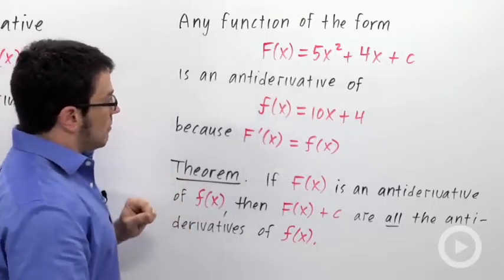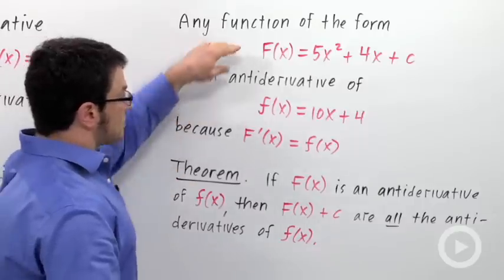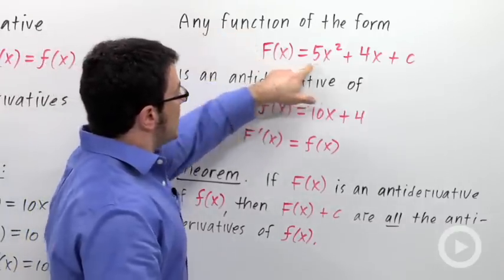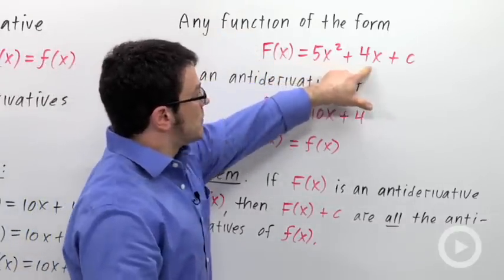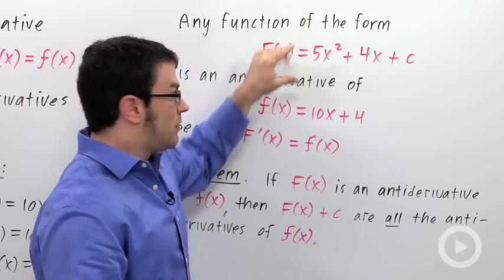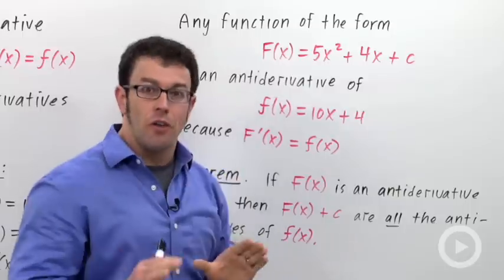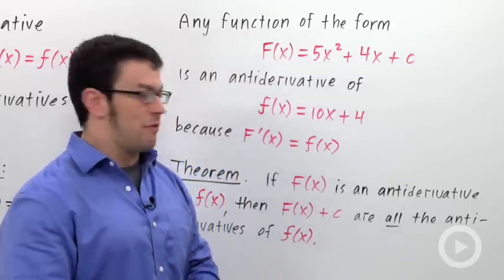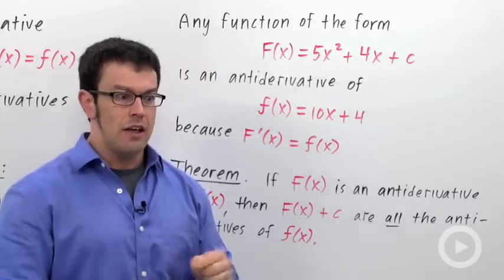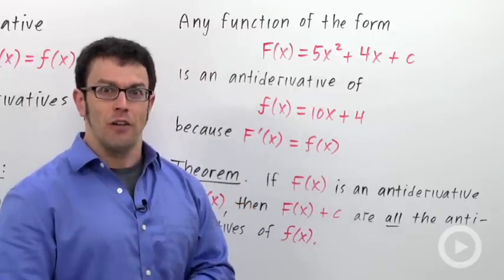So that's really powerful. And so as I just said, the first example I came up with, 5x squared plus 4x, once I had found that antiderivative of 10x plus 4, I was done. All I have to do is add a plus c, and that's all the antiderivatives of 10x plus 4. Very powerful theorem. Once you find one antiderivative, add a plus c, and you found all of them.